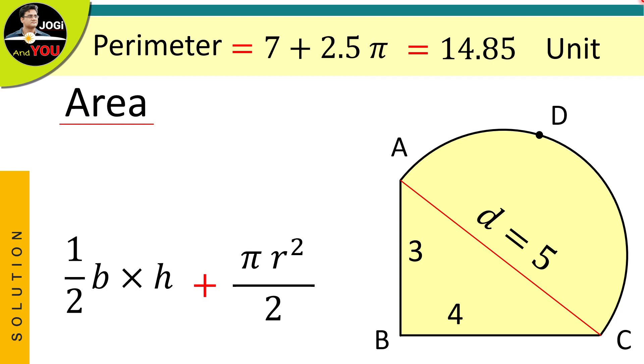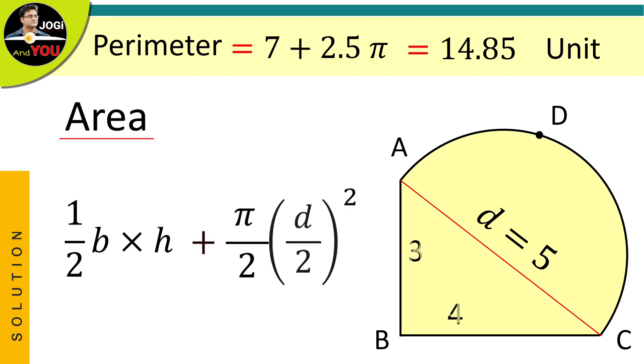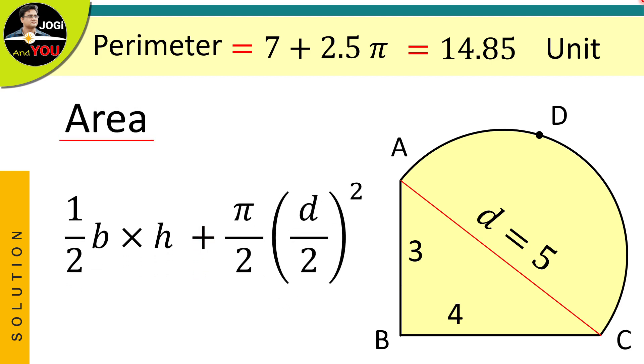Because here we have a diameter, let us replace the radius with half of the diameter. Now, replace the values of base and height with 4 and 3. And just replace this diameter with 5.